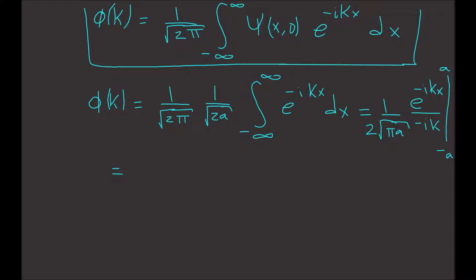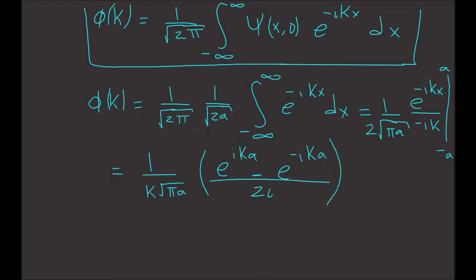Carrying on, we get 1 divided by k times the square root of pi times a, times the quantity e to the i k a minus e to the minus i k a, divided by 2i. Remembering from calculus, this is the same as 1 divided by the square root of pi a, times sine of k a divided by k. So this is our phi function, phi of k.